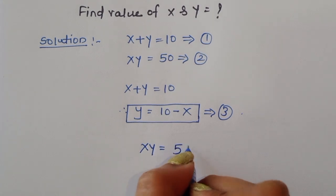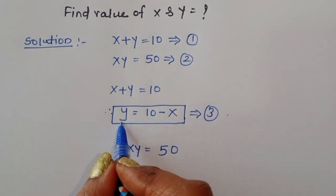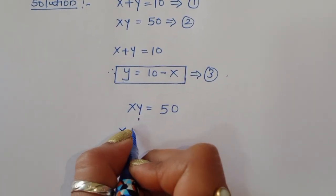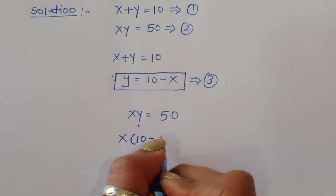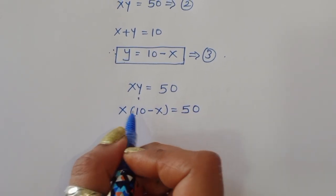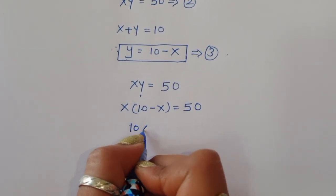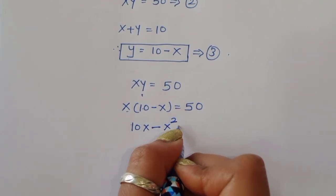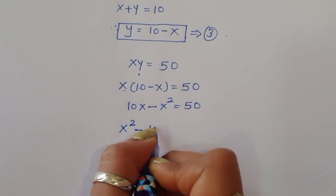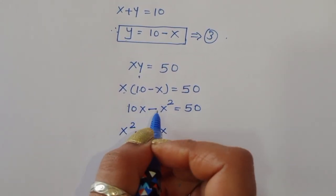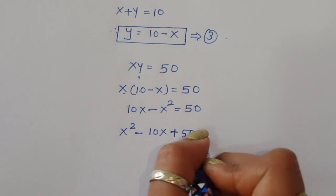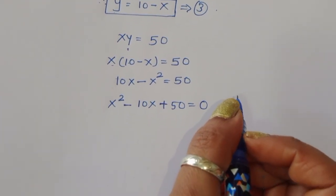From equation 2, xy is equal to 50. We substitute the value of y: x times (10 minus x) is equal to 50. Expanding: 10x minus x squared is equal to 50. Rearranging: x squared minus 10x plus 50 is equal to 0.